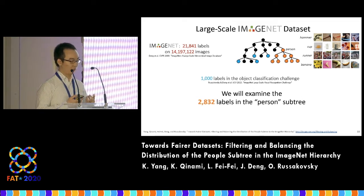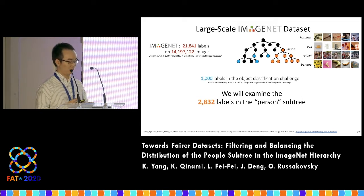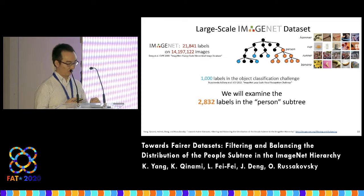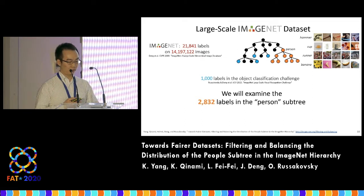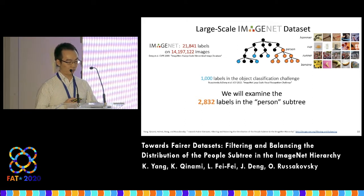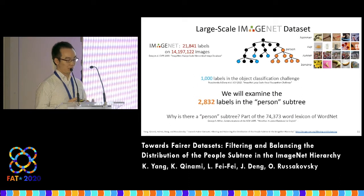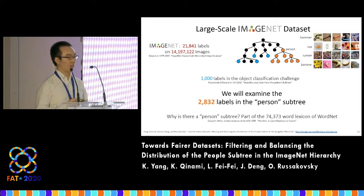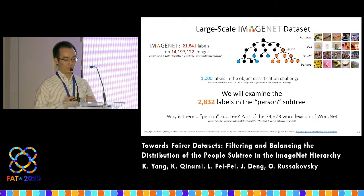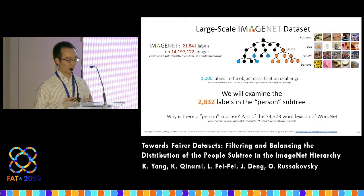There are 2,832 such labels within ImageNet. First, where did these labels even come from? The labels in ImageNet are based on WordNet, a hierarchical ontology of English nouns. WordNet was constructed by linguists and consists of more than 70,000 concepts, including many people labels. So, let's zoom in on the present sub-tree.